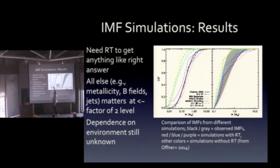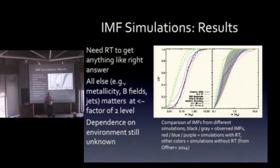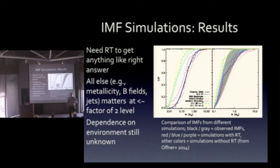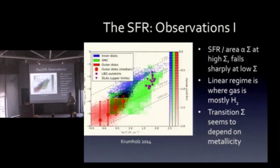The simulations that look terrible are the ones without the radiation — if you don't include the radiation physics, you simply can't get the right IMF. So you need to do the radiative transfer, and it's not just radiation cooling; the key physics is the radiative transfer itself. Now let's talk about the star formation rate — what do the observations tell us?